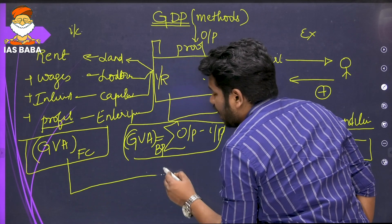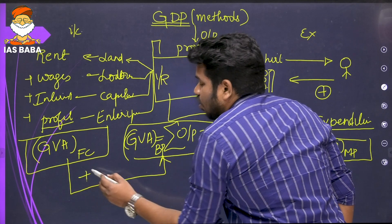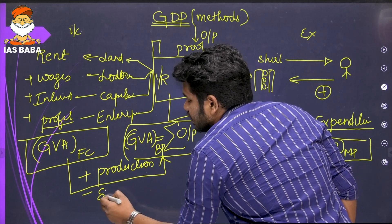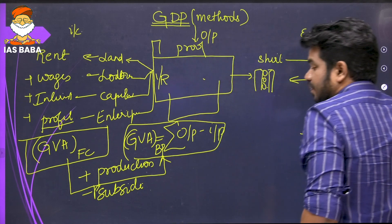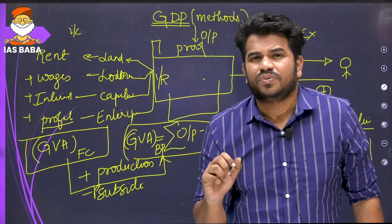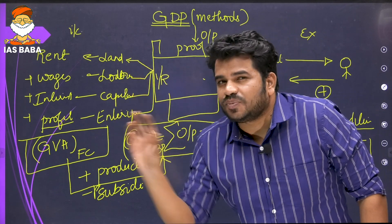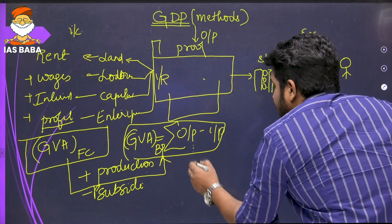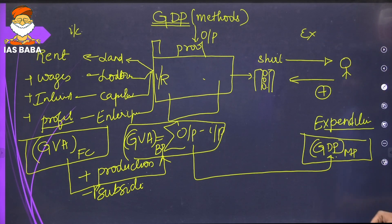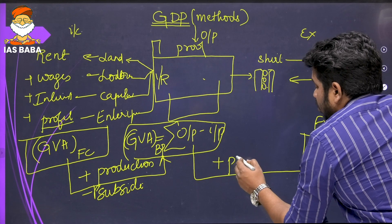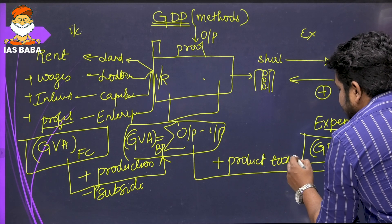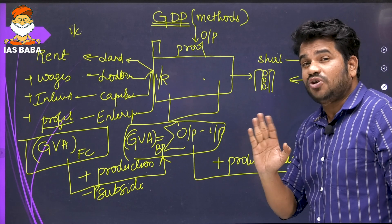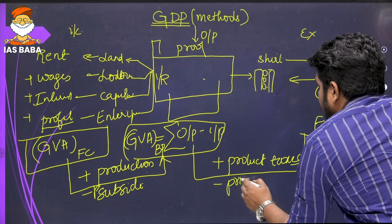To move from gross value added at basic price upward, you add production taxes minus production subsidies. Production taxes — like land revenue — do not depend upon the number of items produced, so they are almost like a direct tax. And from gross value added at basic price to gross domestic product at market price, you add product taxes like GST — which is like an indirect tax — since product tax depends upon the number of items produced, that is, on the output. Then subtract product subsidies.